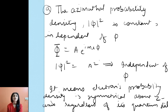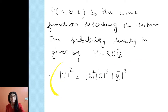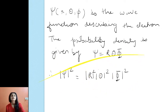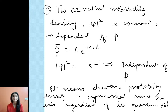We have three components: phi, theta, and r. To find the probability |psi|², we need |R|², |Θ|², and |Φ|². Let us take the first one, |Φ|², called the azimuthal probability density. |Φ|² is constant — it is independent of phi.